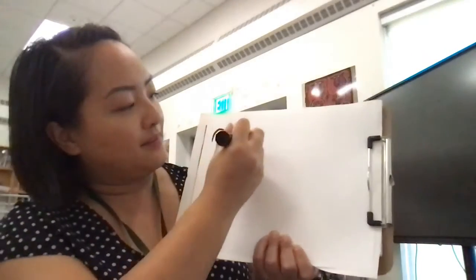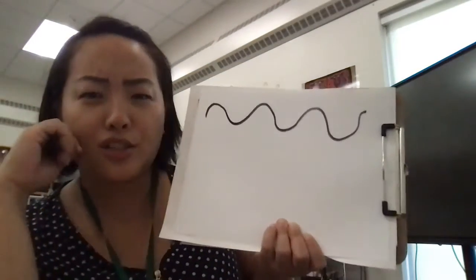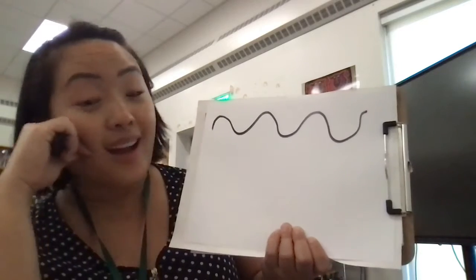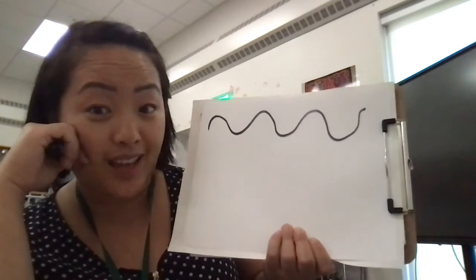I'm wondering if you know some other kinds of lines. What about a line that looks like this? Do you have a name for that line? I call that a wavy line.